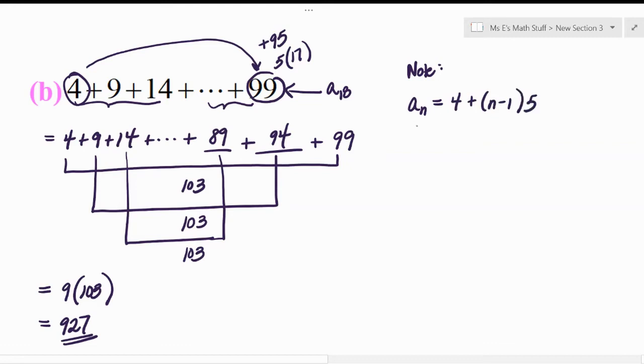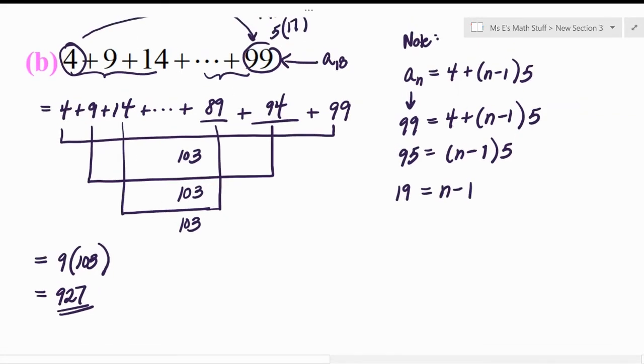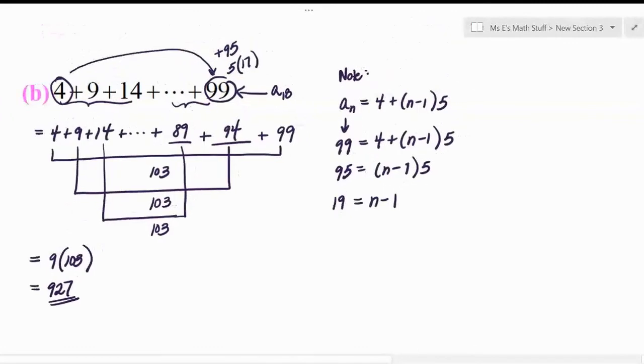And then you replace a sub n with 99, because you're basically asking, what should n be for me to be getting 99 out. And then you could subtract the four over, you'd get 95. And then you could divide by five, you'd get 19. Wait, did I do math wrong over there? I did. So awesome. I totally did math wrong. Oh man. Okay. Because 95 divided by five is 19. Shoot.